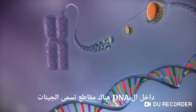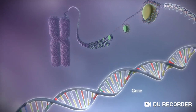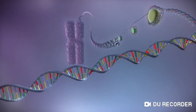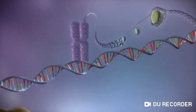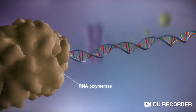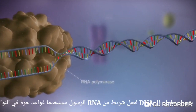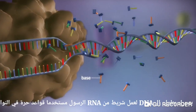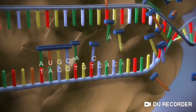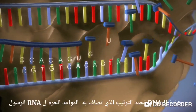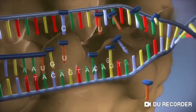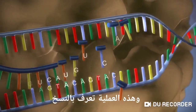Within the DNA are sections called genes. These genes contain the instructions for making proteins. When a gene is switched on, an enzyme called RNA polymerase attaches to the start of the gene. It moves along the DNA, making a strand of messenger RNA out of free bases in the nucleus. The DNA code determines the order in which the free bases are added to the messenger RNA. This process is called transcription.